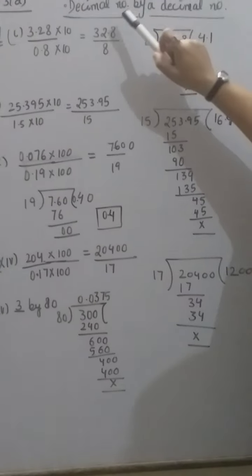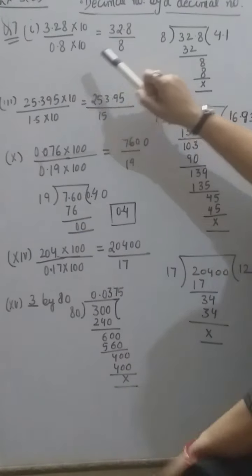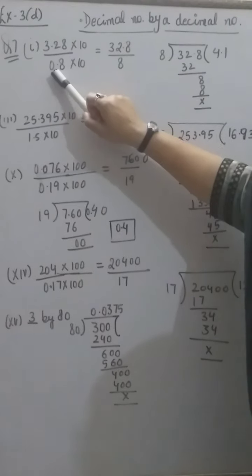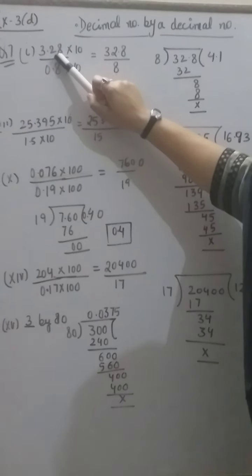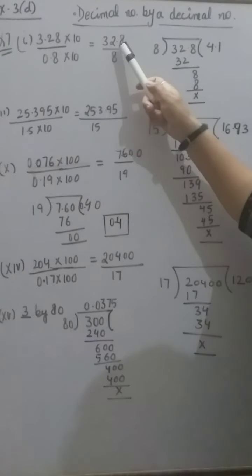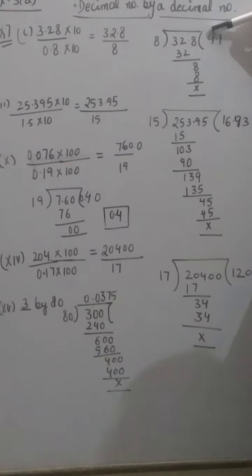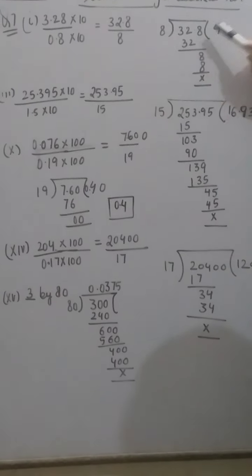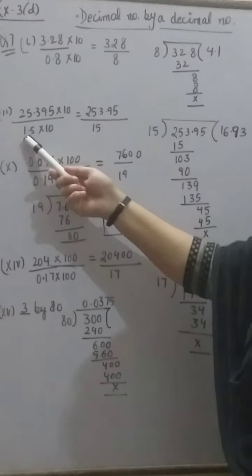Question number 7: we have to divide a decimal number by a decimal number. When dividing a decimal by a decimal, we first change the divisor into a whole number. Here the divisor is 0.8, which has one decimal place. So we multiply both numerator and denominator by 10. When we multiply a decimal number by 10, the decimal shifts to the right by one place. We get 32.8 in the numerator and 8 in the denominator. Dividing 32.8 by 8: 8 fours are 32; place the decimal point; 8 ones are 8. So our answer is 4.1.